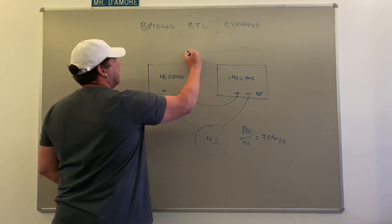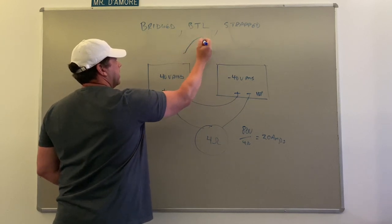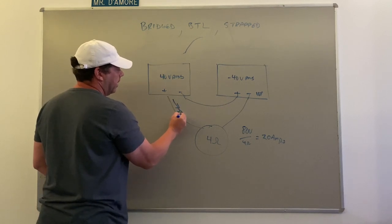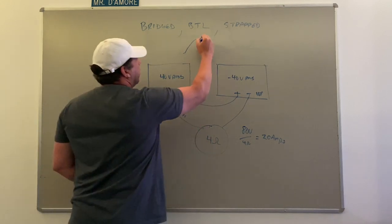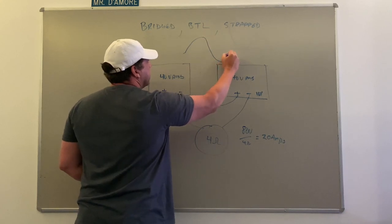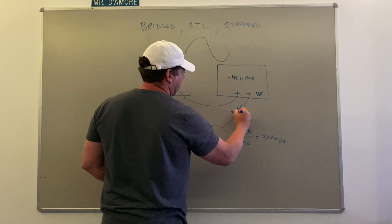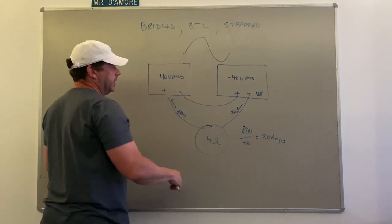So when the signal is coming up like this, at this point here, this amplifier is having to put out 20 amps. And when we get down here and we're like this, we're at the bottom here, this one's having to push 20 amps this way, this is going back this way now. So you see...